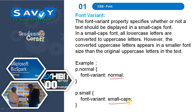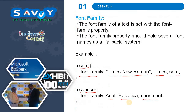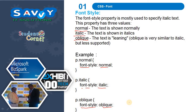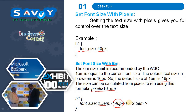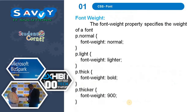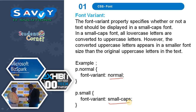So in this video, what we learned is: first, font family; next, font styles — they are normal, italic, and oblique; then font size, where we need to know absolute size and relative size, and also font size with pixels and font size with em. 1em equals 16px. Next is font weight — normal, lighter, bold, and 900. Finally, font variant, which specifies whether or not text should be displayed in small caps or normal.